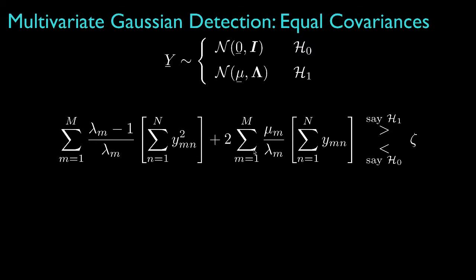The parameters mu and lambda are determined by the original means and covariances according to the pre-processing steps that we outlined. Now, regardless of the values in the original covariance matrices, if they are the same for both hypotheses, then the diagonal covariance for the pre-processed data under hypothesis one will be an identity, and all the values for lambda will be equal to one.